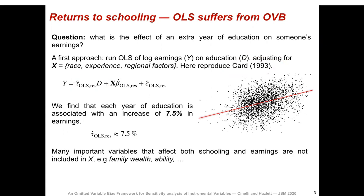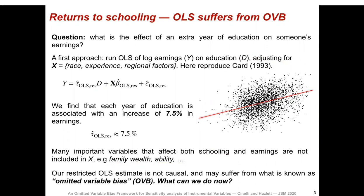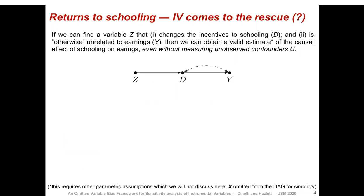But this regression has some problems. For example, many important variables that affect both schooling and earnings are not included in X, such as family wealth or ability. Thus, our OLS estimate may suffer from what is known as omitted variable bias. So what can we do? To the rescue comes instrumental variables.